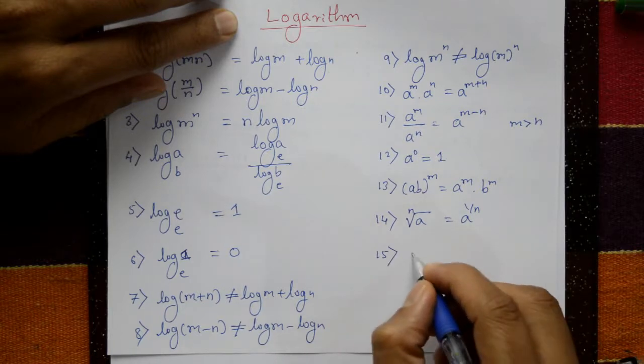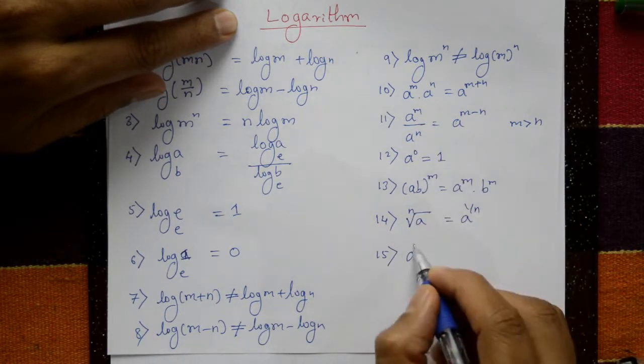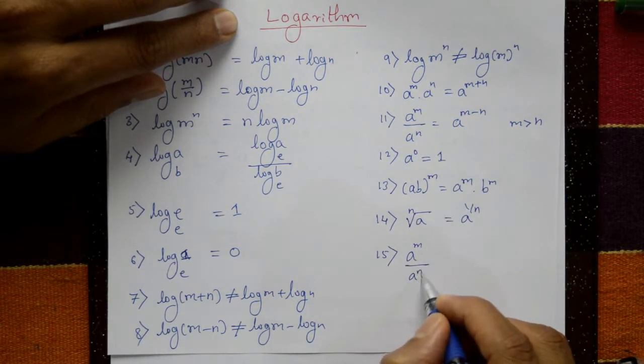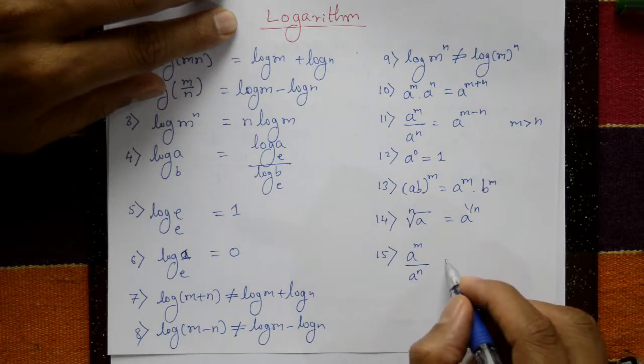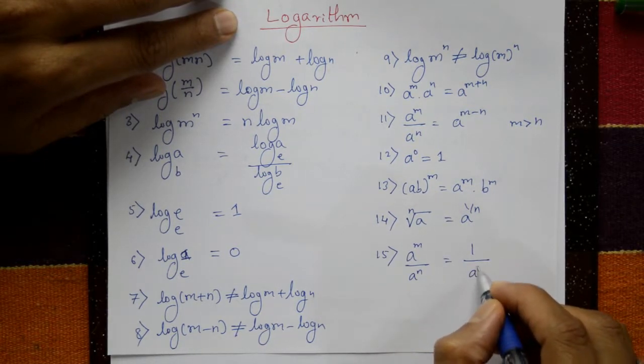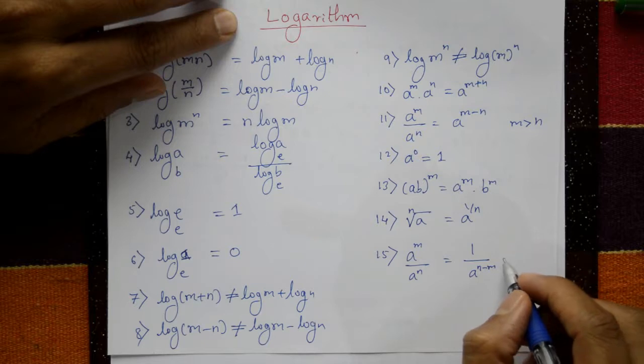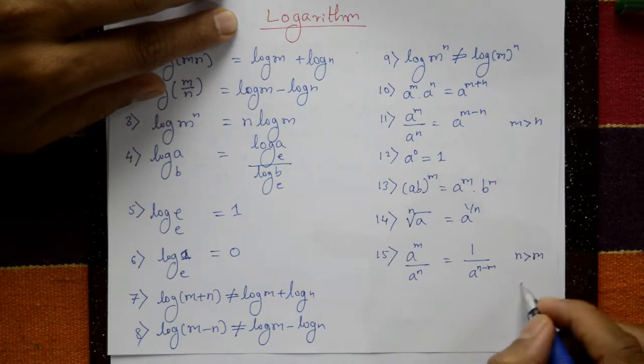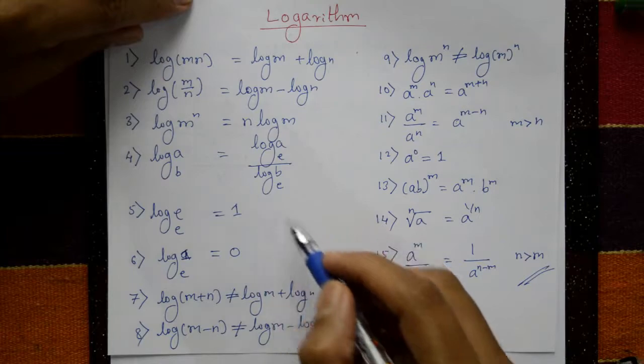One more last one, a raised to m by n. Same as a raised to m by a raised to n. You can write one upon a raised to n minus m. That means if n is greater than m. So these are logarithm properties.